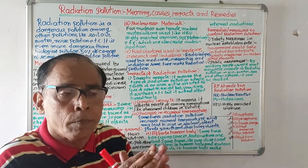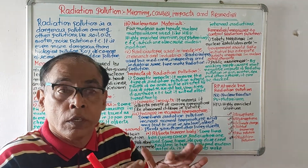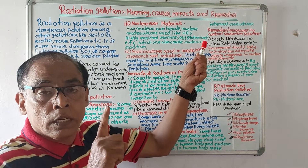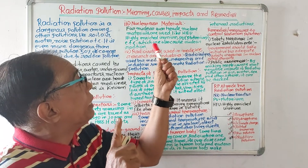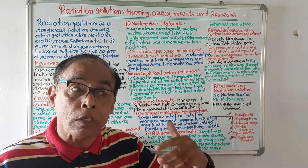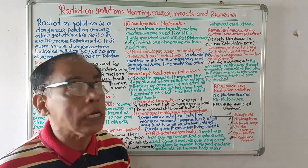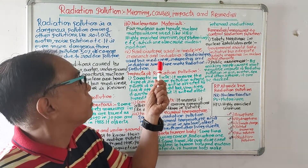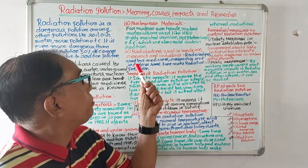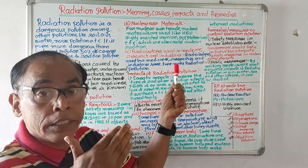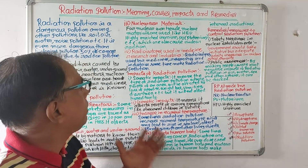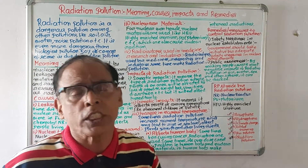For nuclear weapons, nuclear materials like HEU (Highly Enriched Uranium) and PU (Plutonium) are used, and they sometimes cause radiation pollution. Number four: radioisotopes used in medicine, research, and industries. Radioisotopes used for medicine, research, and industry sometimes make radiation pollution. So we are clear about the meaning and causes of radiation pollution.